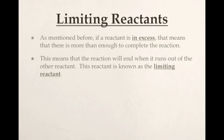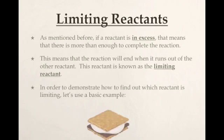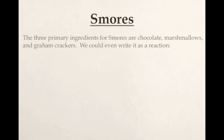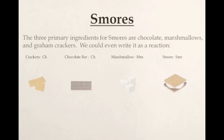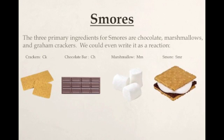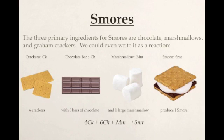A little confusing at first, so let's break this down into something everyone can understand. We're going to talk about s'mores. I think everybody's familiar with the basic concept of a s'more, but the primary ingredients are chocolate bars, marshmallows, and graham crackers. We're going to write this as a reaction. We'll abbreviate crackers and chocolate and all that. It takes four crackers, six bars of chocolate, one large marshmallow to make one s'more. If we were to write that as an equation, it's going to look like this.